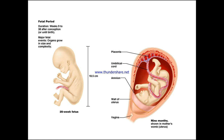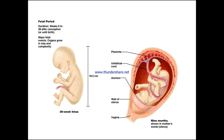The fetal period runs from week nine to 38 after conception or until birth, with organs growing in size and complexity as the major fetal events. Here we can see a 20-week fetus at 18.5 centimetres. At nine months, shown in the mother's uterus preparing for birth, you can see the umbilical cord, the placenta, the amnion, the wall of the uterus, and the eventual passage through which the child shall pass into the world.